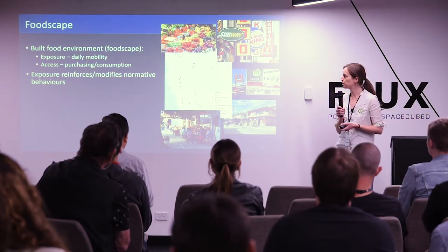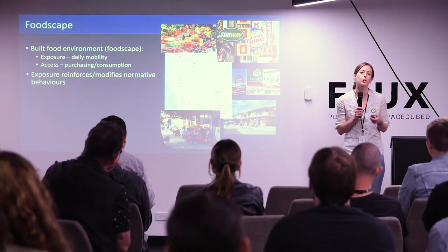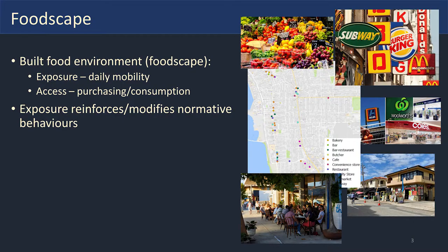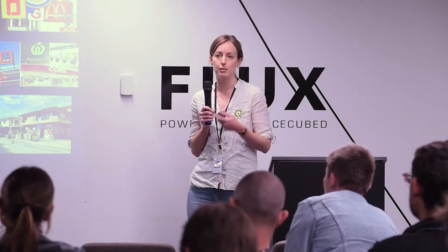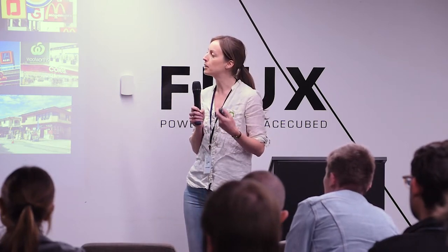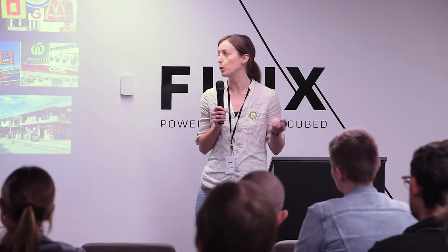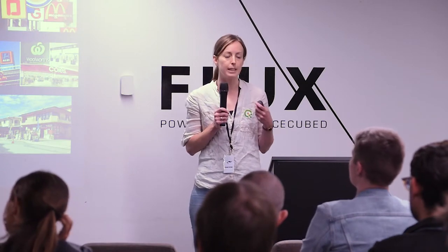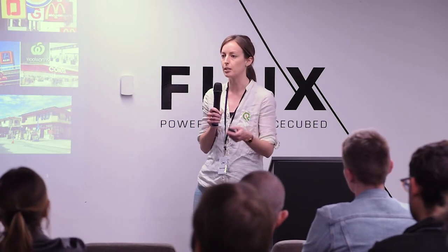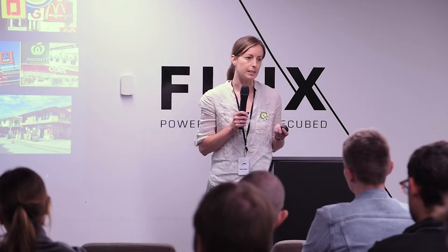So what is the foodscape? This is the built food environment — all the outlets where you go to purchase your food. It's thought that this impacts our diet through both exposure and access. Access is physically going there to purchase or consume your food. Exposure is what you see as you go about your daily activities, and the theory is that exposure reinforces or modifies normative eating behaviours through regular visual cues. So if you regularly see a McDonald's or fast food wrappers on the floor, that's a visual cue that it's normal to eat, and you're more likely to eat it.